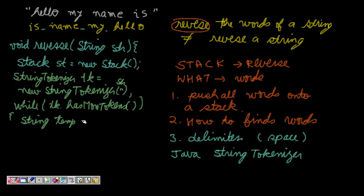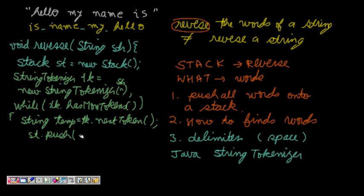Inside the loop, we get the next token: String temp = tk.nextToken(). Then we push it onto the stack: st.push(temp). This way, all the words go into the stack. Then we just need to pop things out of the stack to print them.